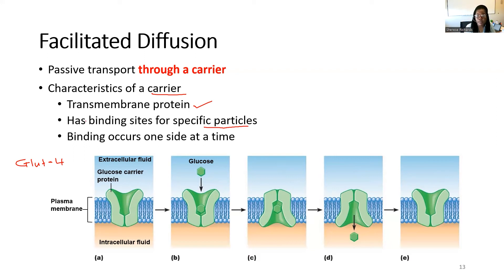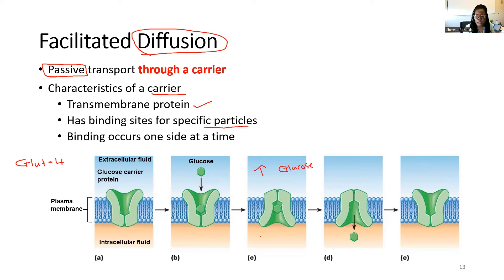This is still considered diffusion — glucose is still moving along a concentration gradient. We also want to emphasize the word passive, because this is still a downhill, spontaneous movement. Although we require the help of a carrier or transporter, the gradient is still the driver: high glucose on one side, low glucose on the other. The transporter simply helps get it through the membrane.